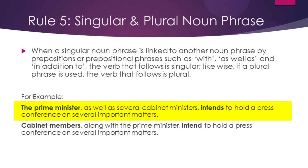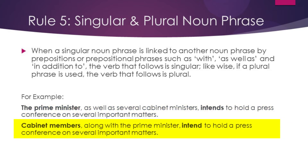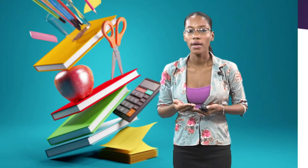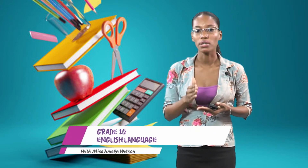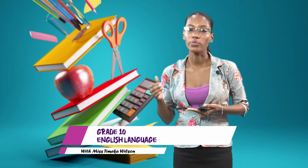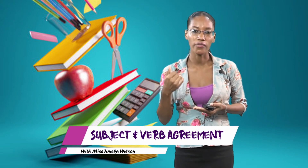Conversely, in example two: cabinet members, along with the prime minister, intend to hold a press conference on several important matters. If we remove the phrase 'along with the prime minister,' we still have a plural subject — cabinet members. Because the subject is plural, we must use the plural form of the verb. So remember: identify the subject, remove the intervening phrase, and determine whether to use the singular or plural form of the verb.